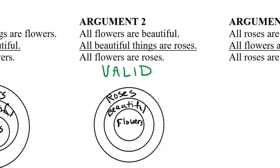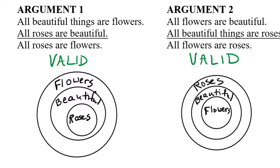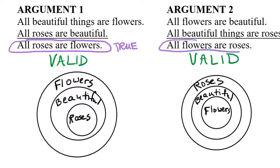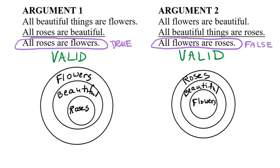I want to pause here to compare argument one with argument two. In argument one, we had the conclusion 'all roses are flowers,' which we know from experience is true — and we also had a valid argument. But in argument two, we have the conclusion 'all flowers are roses,' which we know is false. For example, daisies are flowers but they're not roses. So we had a valid argument — the reasoning worked — but we got a false conclusion.